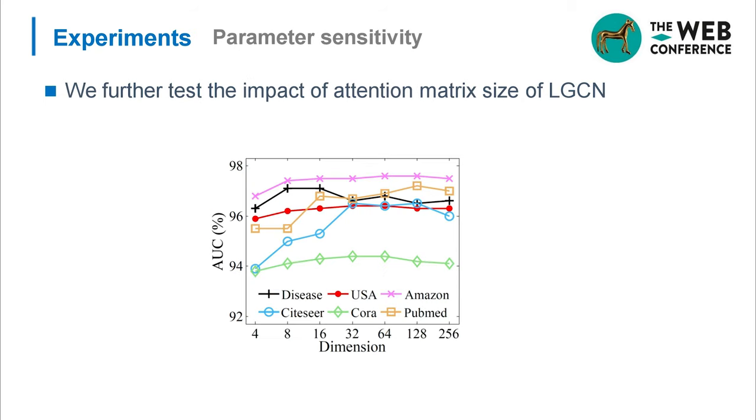We further test the impact of attention matrix size of LGCN. The results on link prediction tasks are shown in figure 5. We can see that with the growth of the matrix size, the performance rises first and then starts to drop slowly. This result indicates that the attention matrix needs a suitable size.